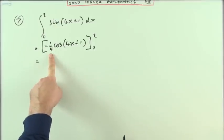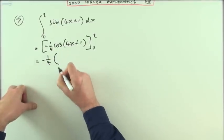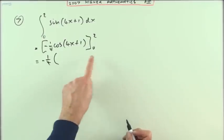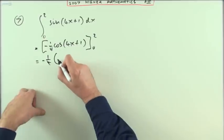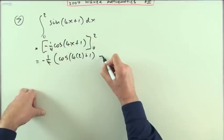So evaluate it from zero to two. Another thing is there's a negative quarter multiplying both parts, so if you take that out as a common factor and then do the evaluations. So what have I got? I've got a cos of four times two plus one, putting the two in.